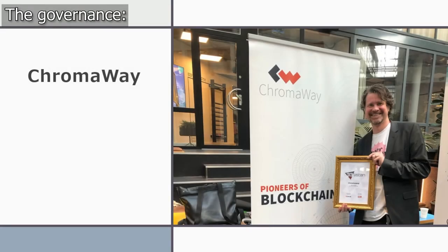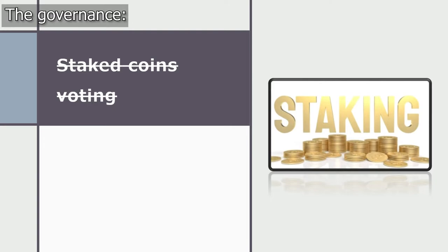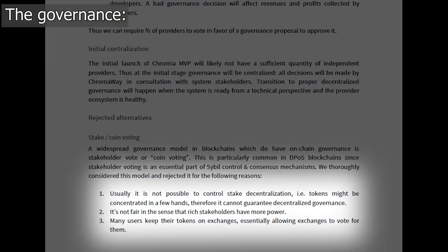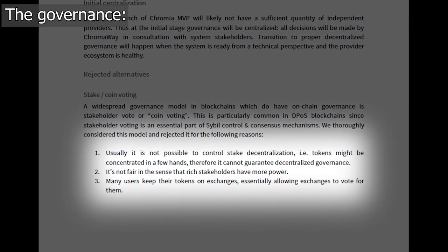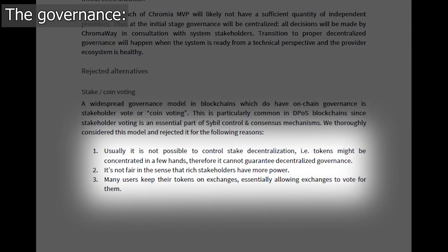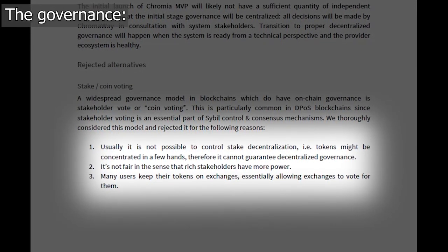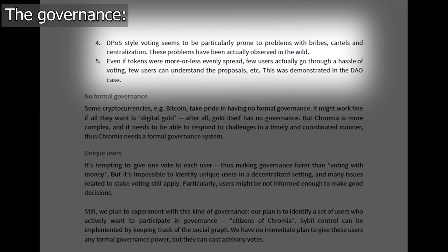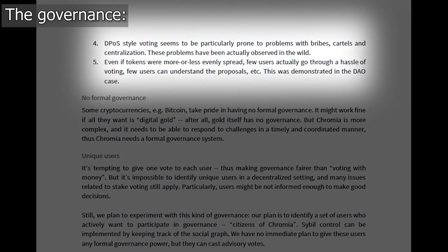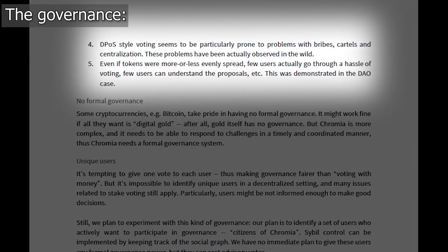Initially Chromia will have centralized governance by ChromaWay. Many other platforms chose staked coin voting, but Chromia rejected it for several reasons. This system is considered unfair because wealthy participants have even more power, exchanges vote on behalf of users whose coins are staked there, and there is observable bribery, cartel formation, and centralization — which is actually happening on many such platforms.